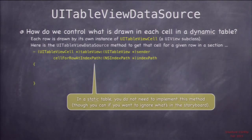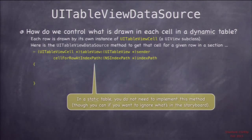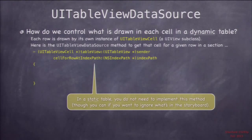We're being asked here to provide a cell — a UITableViewCell, which is a UIView — to draw that row in that section. We only need this for dynamic tables, because for a static table we set all this up in the storyboard, so there's no need for the table view to be asking us for this view. This is only for dynamic tables.